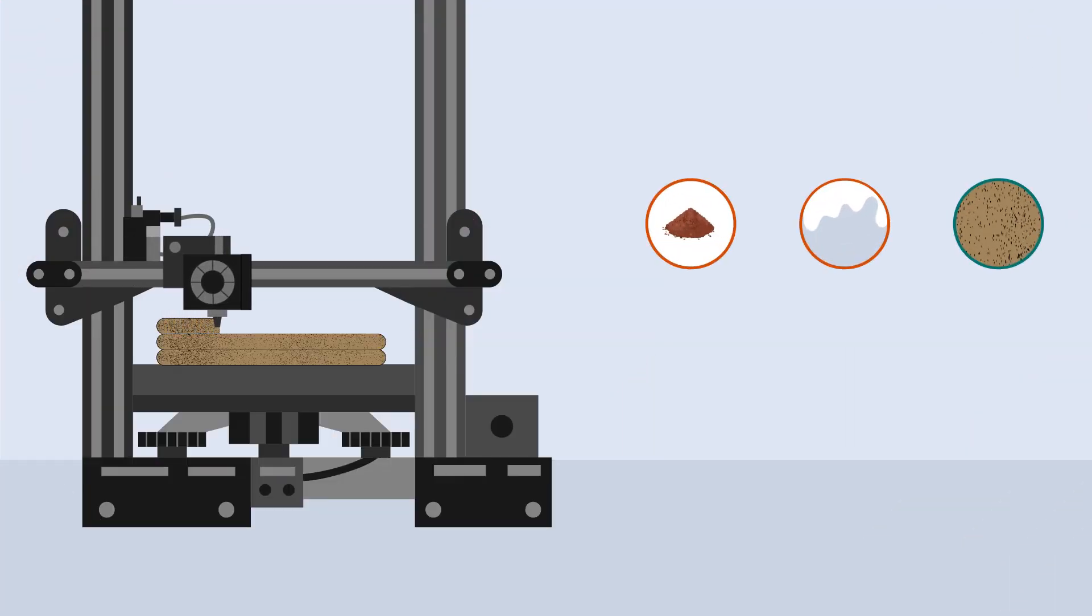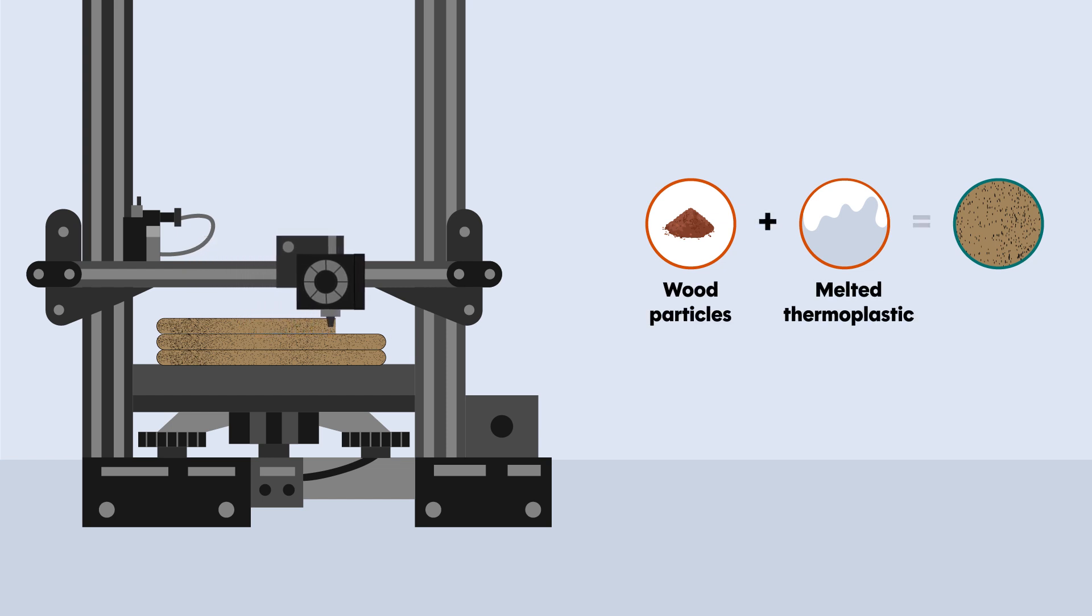3D printing of wood typically relies on an approach called fused deposition modeling. Here, wood is ground up into fine particles and mixed with melted thermoplastic, which can then be deposited in thin layers before it hardens.